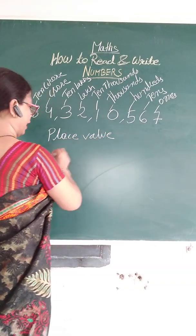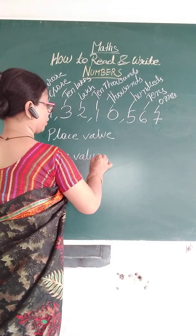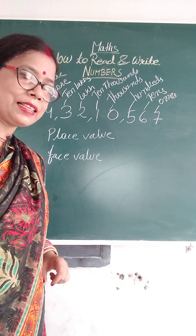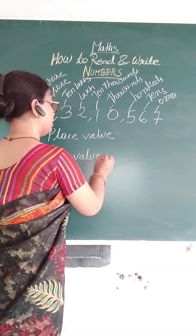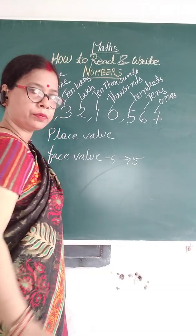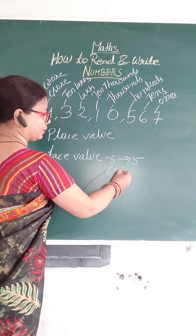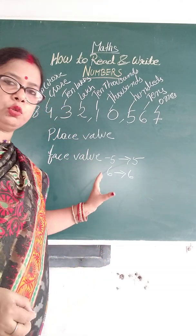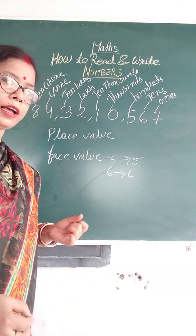Now, place value and face value. Face value is always as it is — for example, five's face value is always five, six's face value is six. Whatever the digit is, the face value stays as it is. This is very useful for younger students.